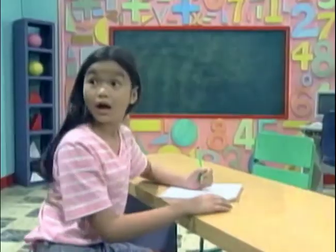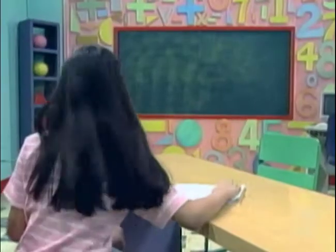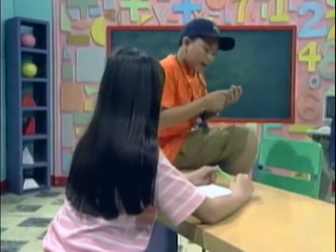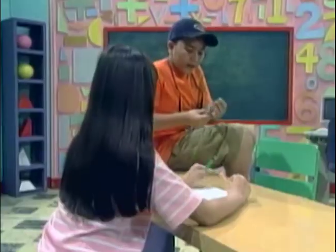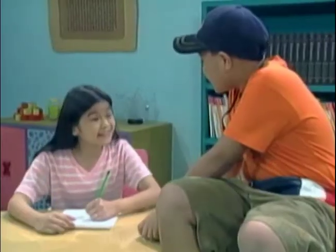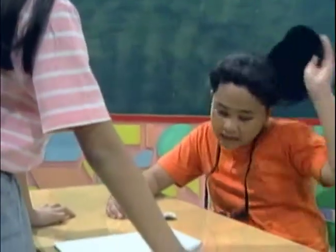Joey reports that everything is sold out. Patricia expects 360 pesos, but Joey says they only collected 288 pesos. Patricia asks if he gave discounts. Joey admits he gave some away for free because Tweetom was there. His mother scolds him, saying he can never be a businessman.